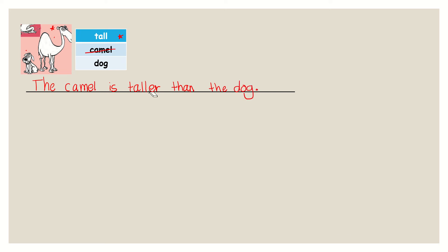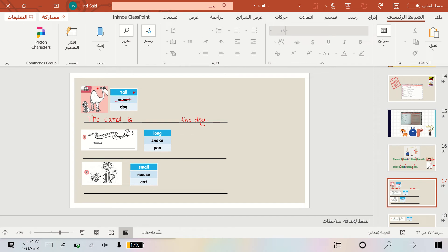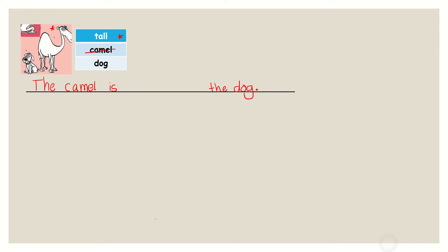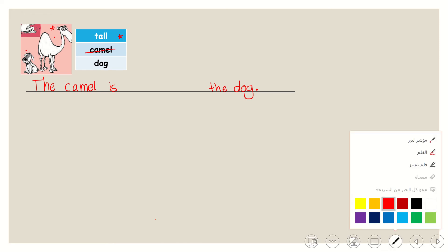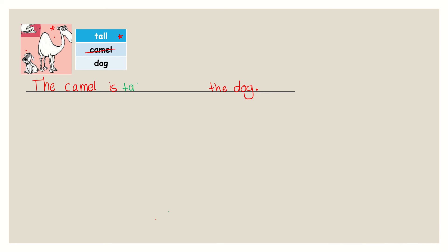That means they are taller than who? The dog. Okay, and full stop. The camel is taller than the dog. Do you see?